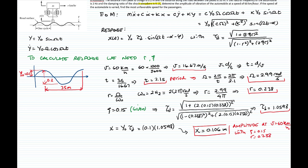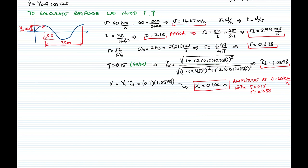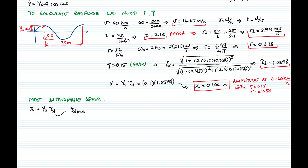Now we want to calculate the most unfavorable speed. Where are the most critical situations? For the passenger, it means the vehicle will move the most. So we want to find the critical speed, which means a critical value for r — a critical frequency ratio — and that means a maximum value for the transmissibility coefficient. To get that, we derive the transmissibility coefficient with respect to r, set it equal to zero, and solve for r. Let me go back to the formula sheet and show that equation.